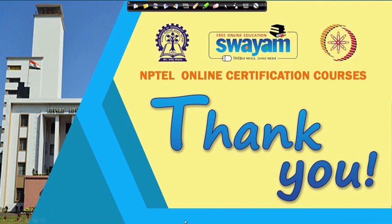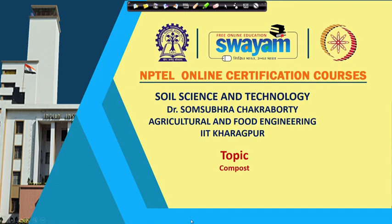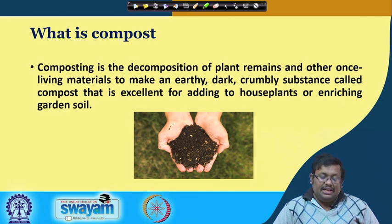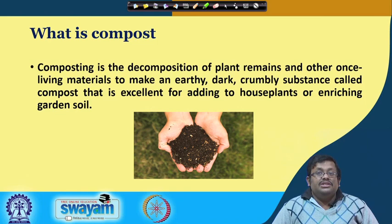We have completed the soil organism lecture. Now let us start another important topic — compost. Compost is basically the end product of composting. Composting is the controlled decomposition of plant remnants and other once-living animal materials to make an earthy, dark, crumbly substance called compost, which is excellent for adding to house plants and enriching garden soils.